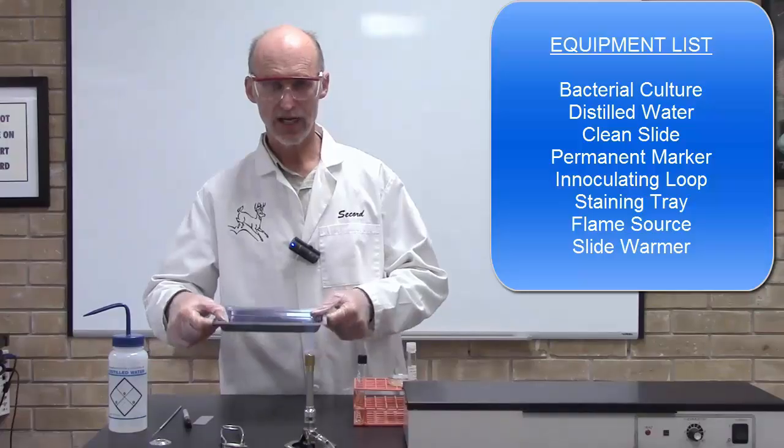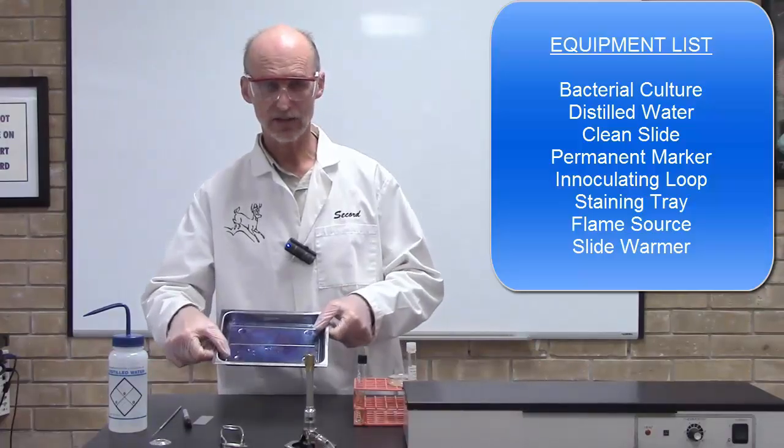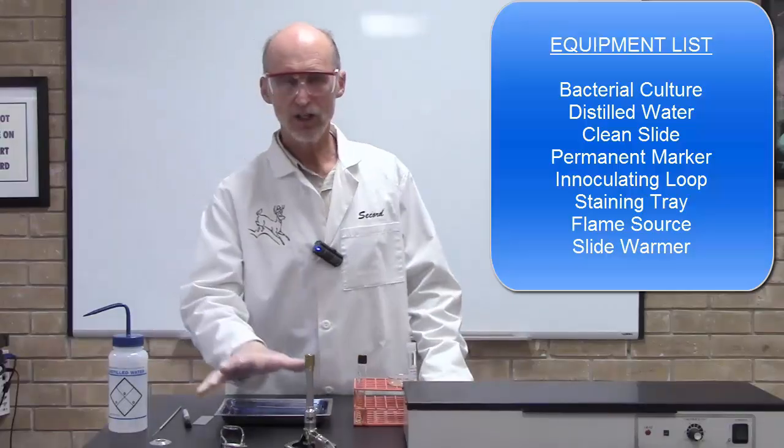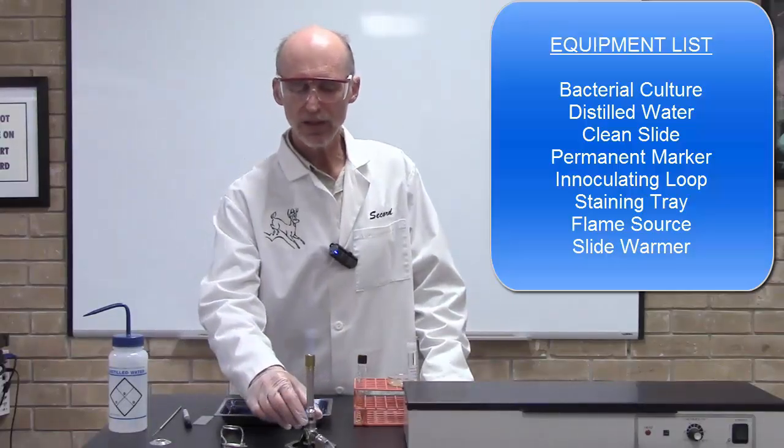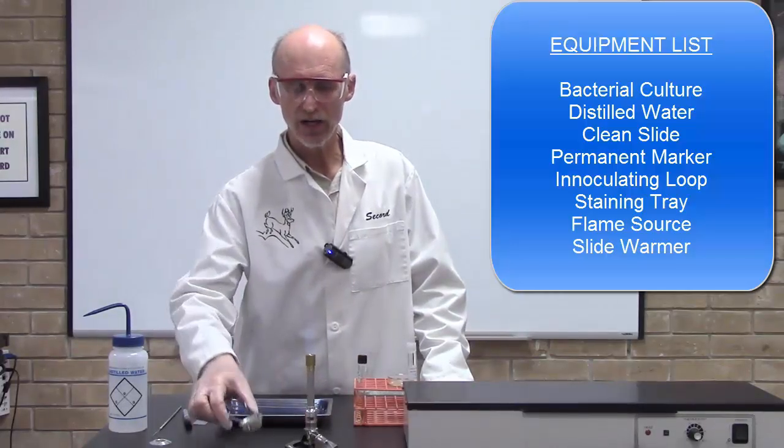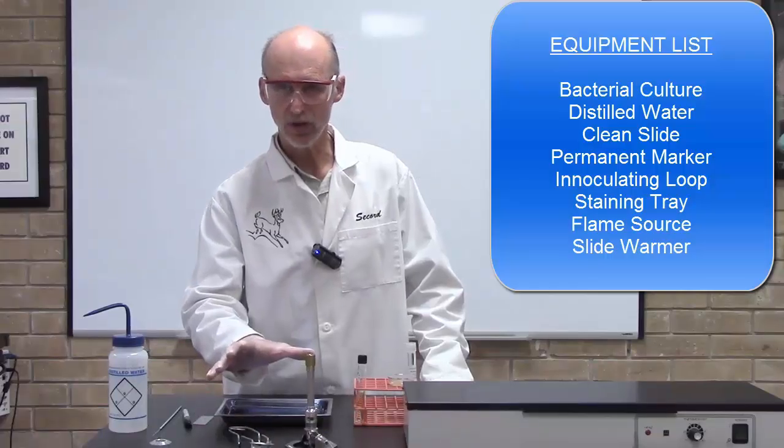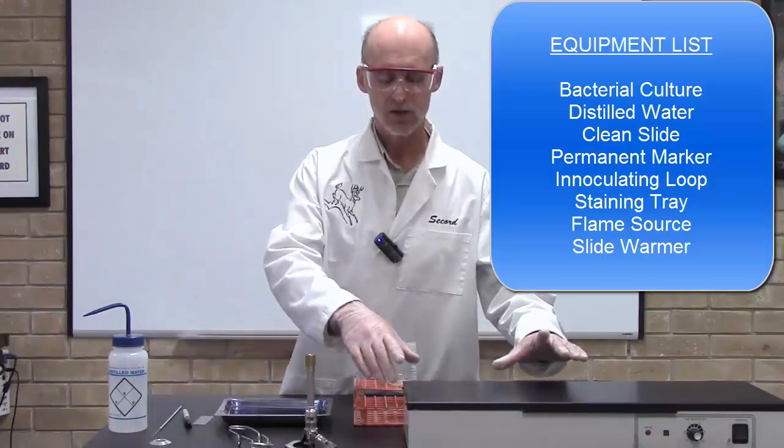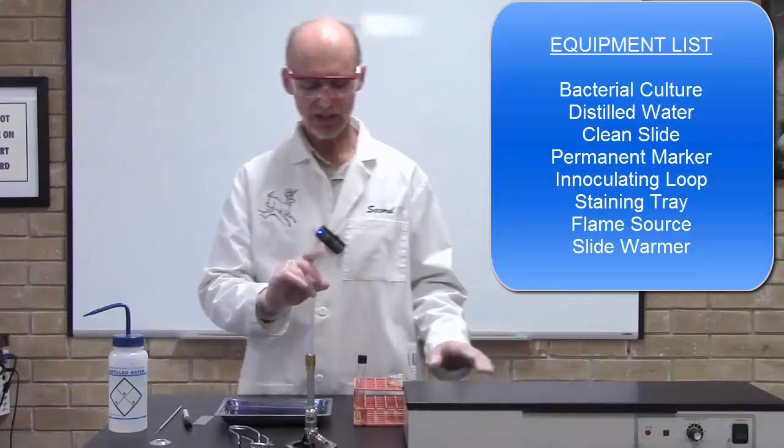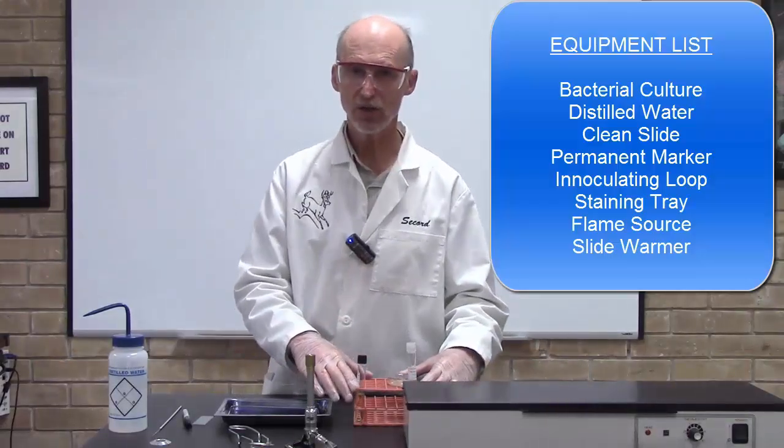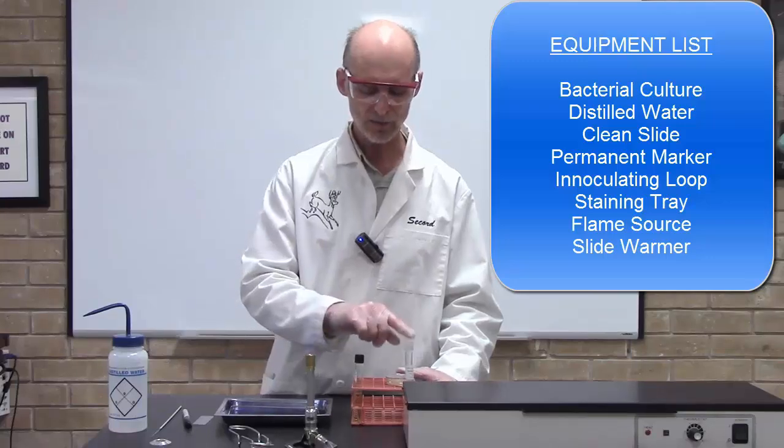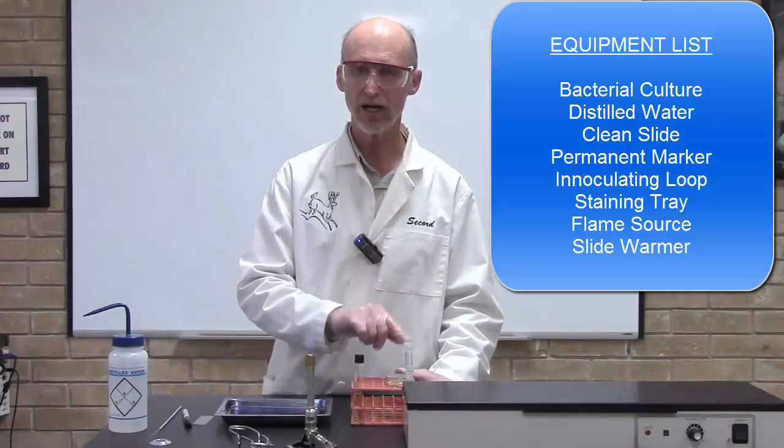You'll need a staining tray to act like a workbench for you. You'll need a flame source. I'm using a Bunsen burner so I have my little flint striker, but any flame source will work. You'll need a slide warmer, and finally you'll need a bacterial culture. Here I have three different bacterial cultures which I will talk about in a second.